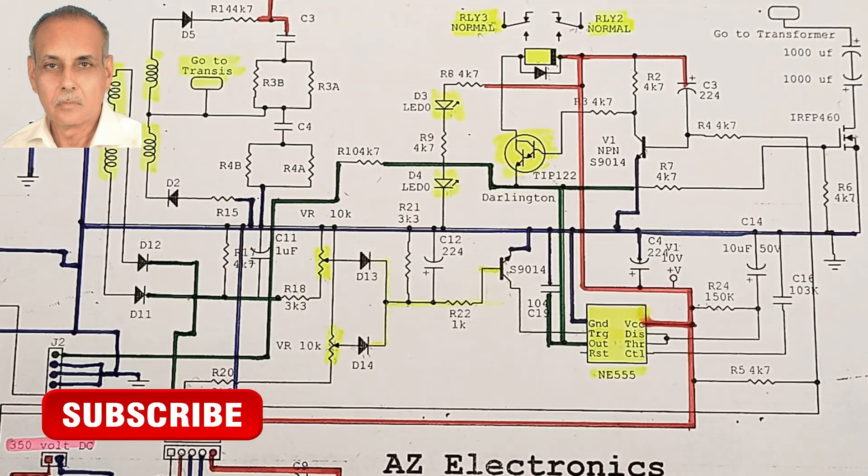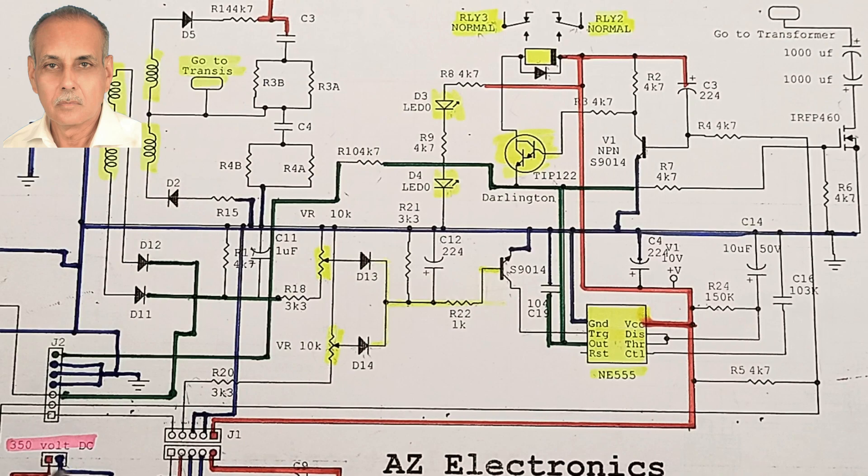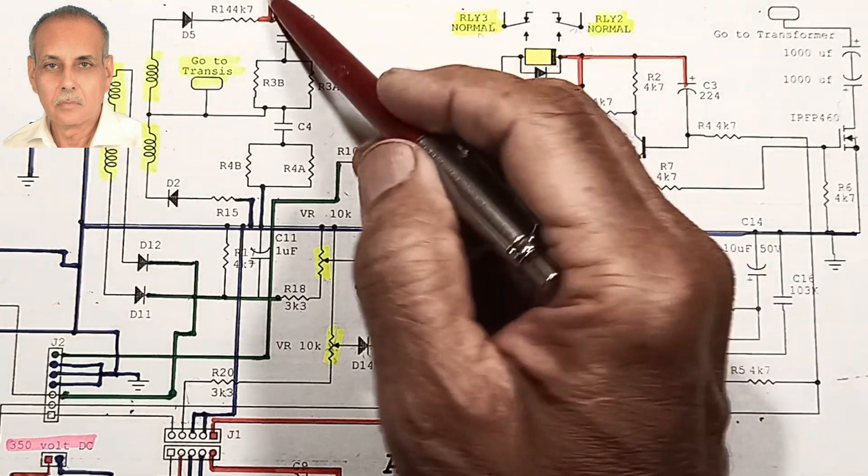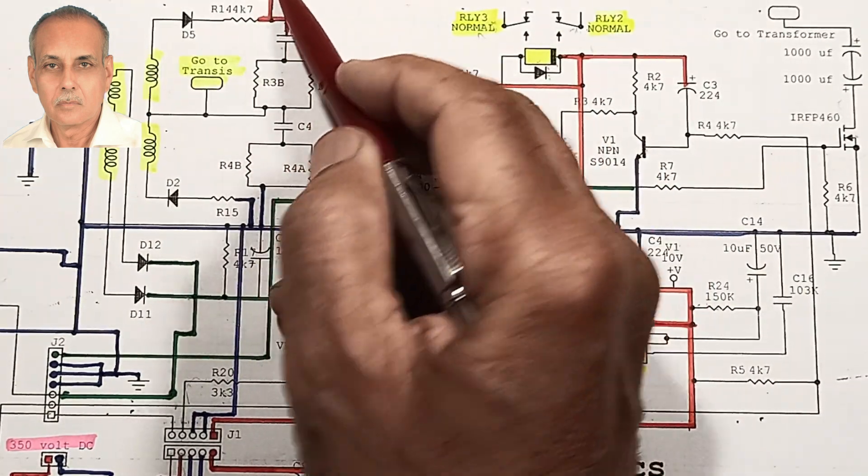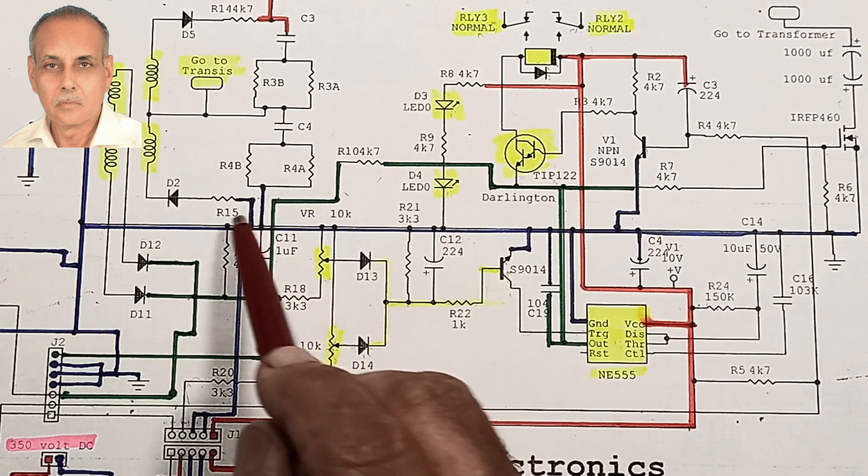When it is triggered, then the negative voltage coming from the IC reaches the relay. Since the other side of the relay is connected to the positive, the relay turns on and the two points of the relay turn off and the generator turns on.